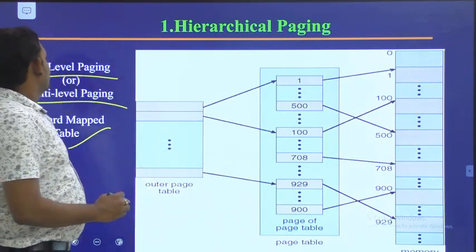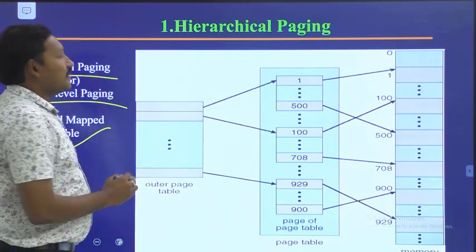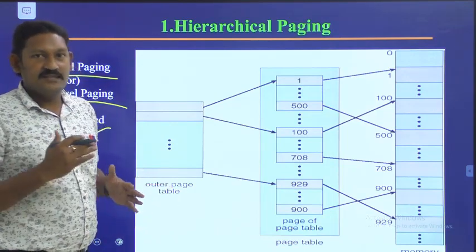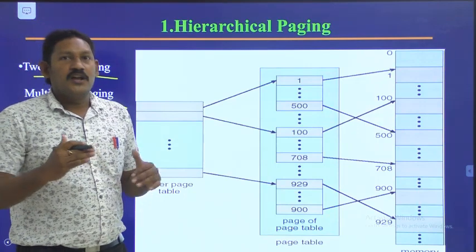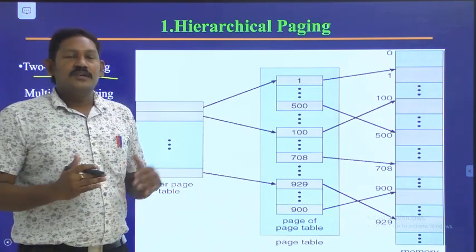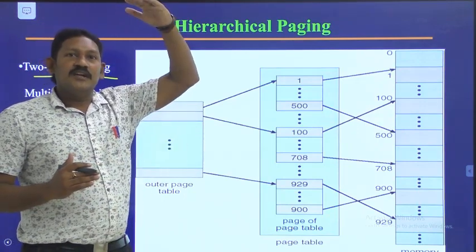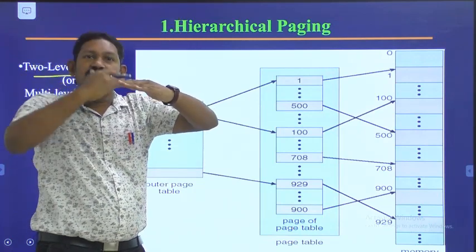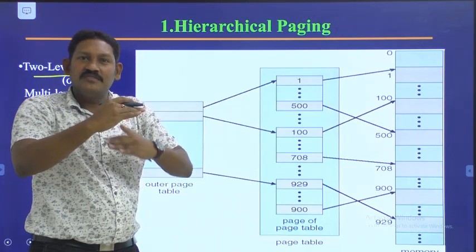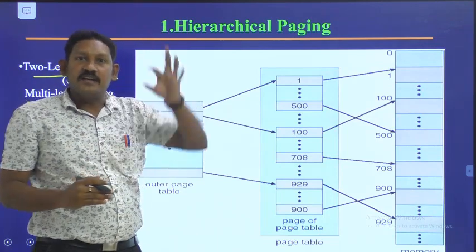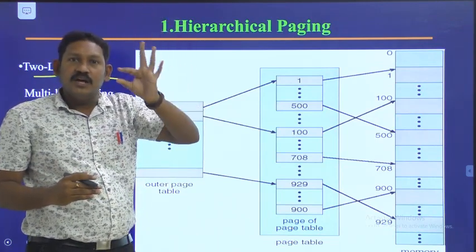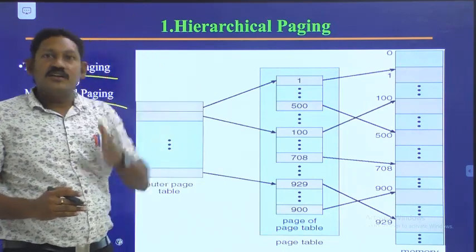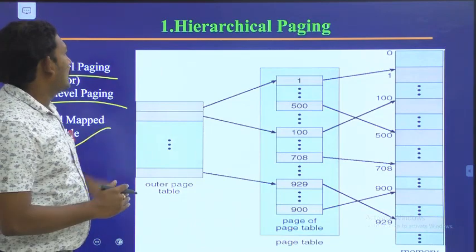In hierarchical paging, there will be a hierarchy. For example, consider a college: management is at the top level, next we have the principal, then the heads of departments, then the staff, and finally the students. So it's a hierarchy — management, principal, HODs, staff, students. Similarly, we have hierarchy in paging.